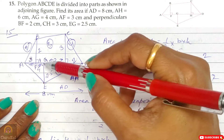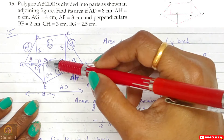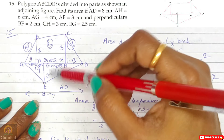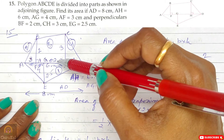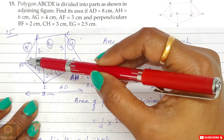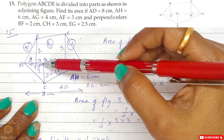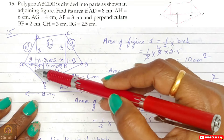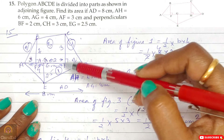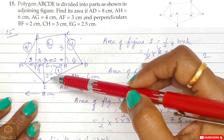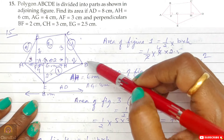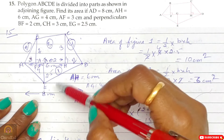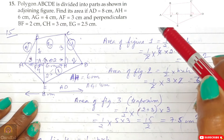Triangle AED is considered as one figure (figure 1) since we know its base AD and height EG. Figures 1, 2, 3, and 4 cover the entire polygon. Area of figure 1 (triangle AED) = half × 8 × 2.5 = 10 cm². Area of figure 2 (triangle ABF) = half × 3 × 2 = 3 cm². Area of figure 3 (trapezium) = half × (2 + 3) × 3 = half × 5 × 3 = 7.5 cm².